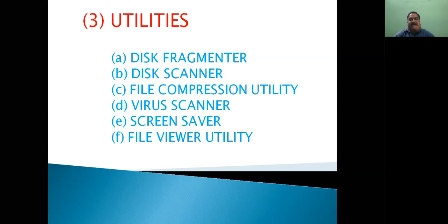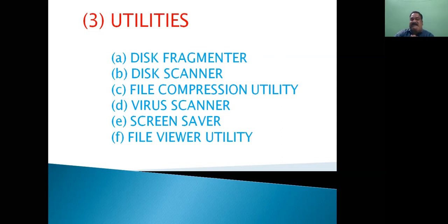Some important utilities are: first, disk defragmenter — it fills the blank spaces in the storage device by shifting data, which improves our system's performance. Second, disk scanner — whenever there is an improper shutdown, some errors come into our disk; disk scanner detects those errors, scans them, and also corrects them. Third, disk cleanup.